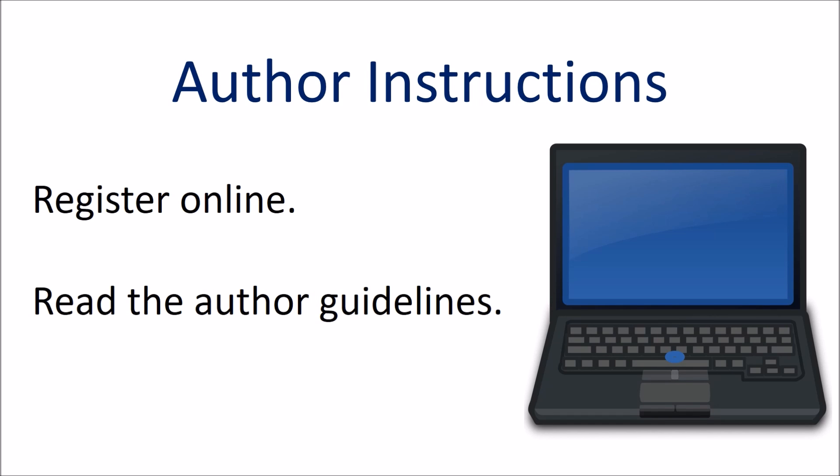In order to get the most up-to-date author guidelines, you will need to register on the journal's article submission website. This is important because journals are always changing which article types they allow and the word limits for each type. The instructions on the website are usually old and not up-to-date, so make sure to login to the website to get the newest version.